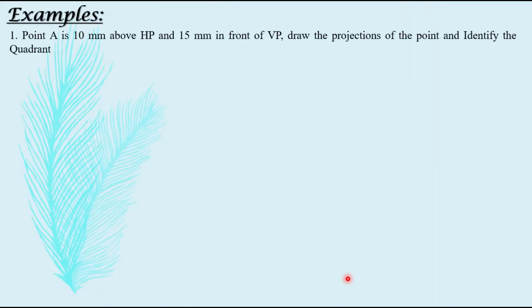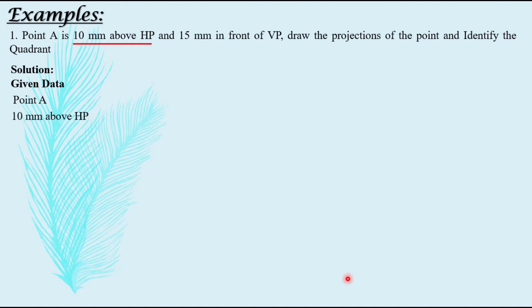Example one: point A is 10 mm above HP and 15 mm in front of VP. Draw the projection of the point and identify the quadrant. Going step by step — given data: point A is 10 mm above HP, and 15 mm in front of VP.